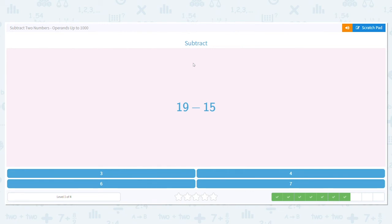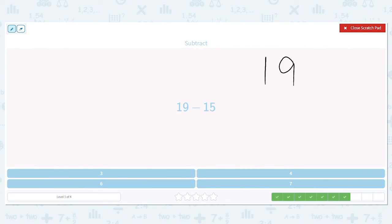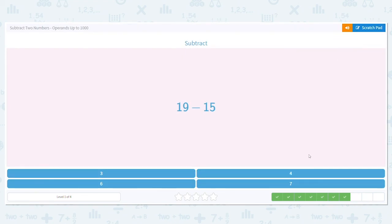19 minus 15. Let's rewrite it in a column for practice. 19 minus 15. My answer, my difference will either be 3, 4, 6, or 7. 1's place. Can I do 9 minus 5? I need more on the top. Do I have more on top in the 1's place? I do. So 9 minus 5 equals 4. And what's 1 minus 1? 0. We don't need to put that 0, but we can. So 19 minus 15 is 4. Nice work.